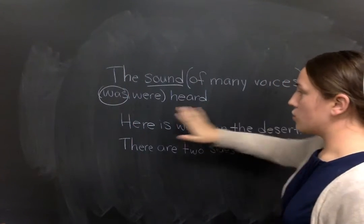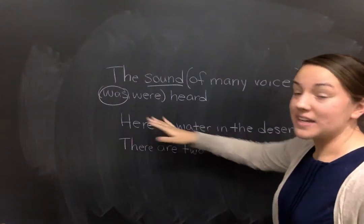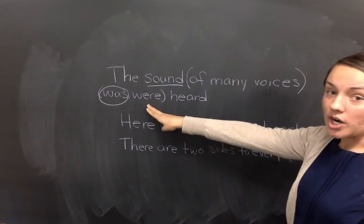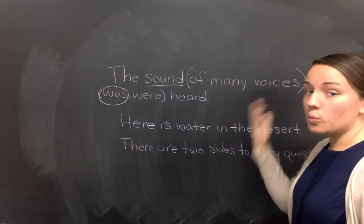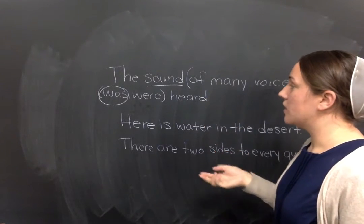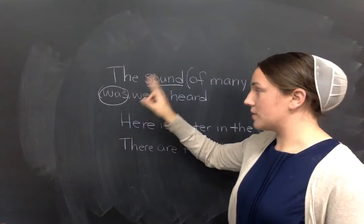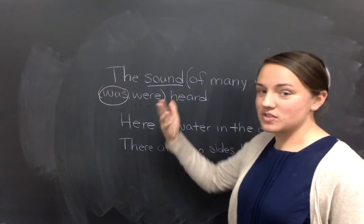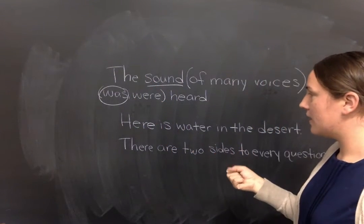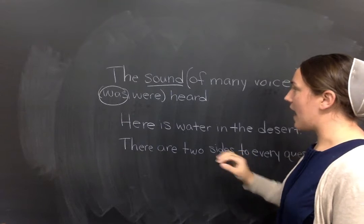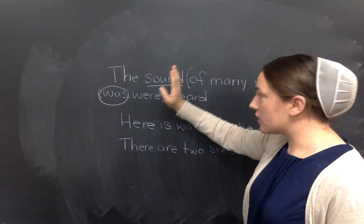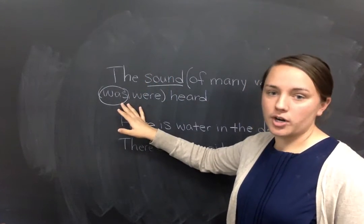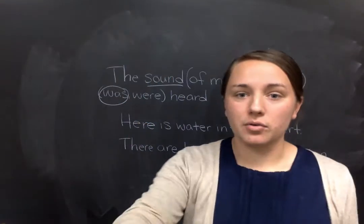Okay. It's not voices was or voices were, because in that case, it would need to be were. Don't worry about what's in the prepositional phrase. Don't worry about how that sounds. Think about the subject and the verb. Sound was is correct, so that is the right thing. Be very careful with that. Do not look at your prepositional phrase to make your subject and verb agree. Look at your subject and your verb to make them agree.